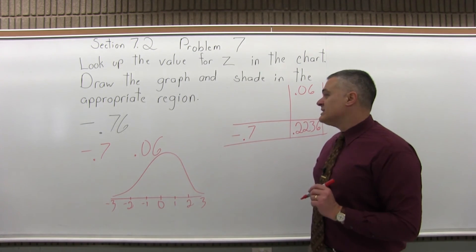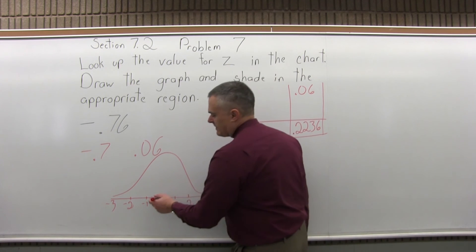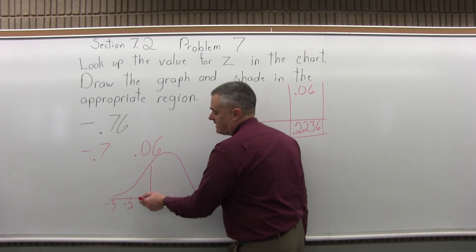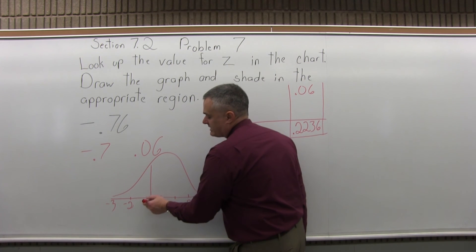So negative .76 that we looked up is by eye about three-quarters of the way out to the negative one from the zero, so negative .76.